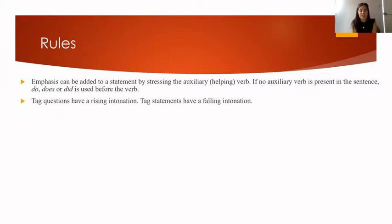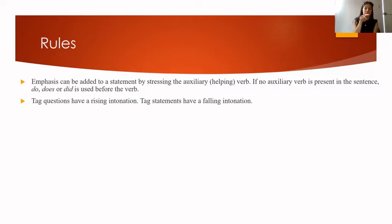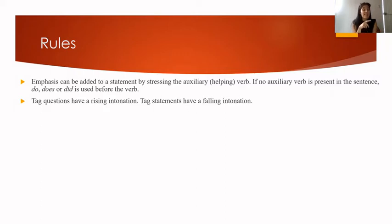Tag questions have a rising intonation. For example: 'This isn't the bus stop, is it?' — because you're actually looking for an answer. However, tag statements have a falling intonation: 'I am playing this song too fast, aren't I?' It's simply confirmation that what was said is true and isn't actually seeking a real answer.